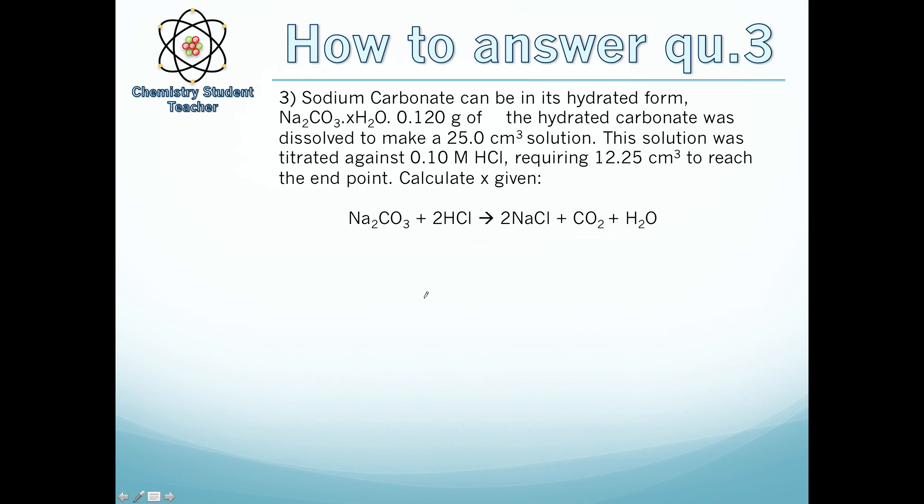So question 3. Sodium carbonate can be in its hydrated form Na₂CO₃·xH₂O. 0.120 grams of the hydrated carbonate was dissolved to make a 25 cm³ solution. This solution was titrated against 0.1 M HCl, requiring 12.25 cm³ to reach the endpoint. Calculate x given this reaction: Na₂CO₃ + 2HCl → 2NaCl + CO₂ + H₂O. You may be thinking where do we start? It's a titration, we start in the place we always do - work out the moles we can given the data above.